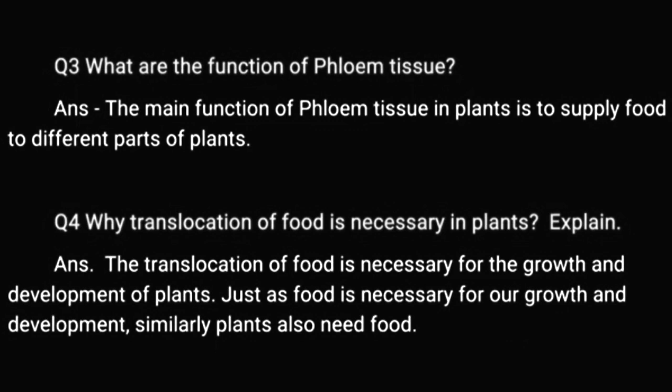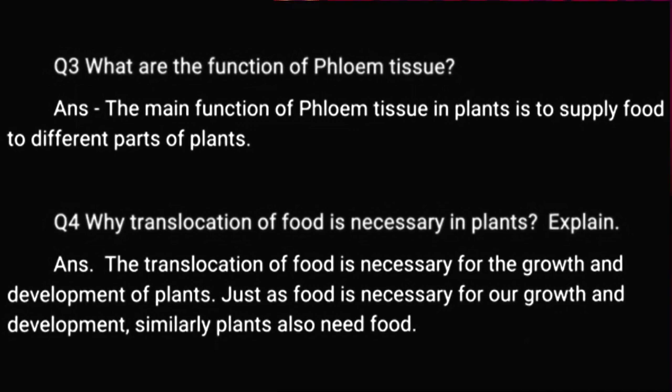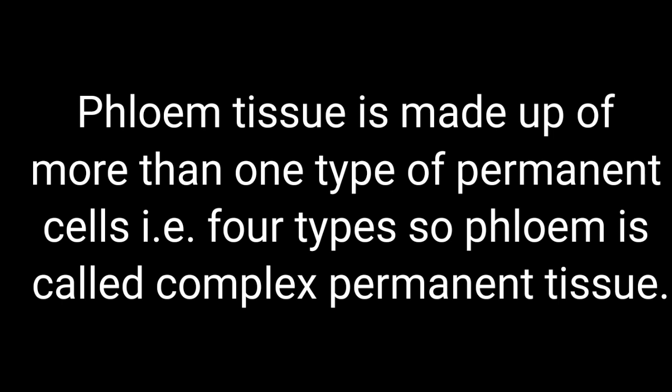Question number four: Why is translocation of food necessary in plants? The translocation of food is necessary for the growth and development of plants, just as food is necessary for our own growth and development. Plants also need food for various other functions. Question five: Why is phloem tissue a complex permanent tissue? Phloem tissue is made up of more than one type of permanent cells — four types — so it is called a complex permanent tissue.